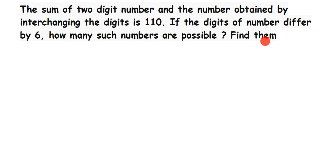In this question, they have given 2 things. One is, the sum of the 2-digit number and its reverse is 110. And they also given that the digits differ by 6, so if you subtract the digits, the answer will be 6. We're going to form 2 equations and solve it.